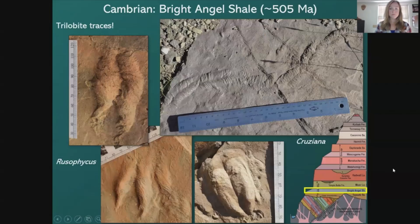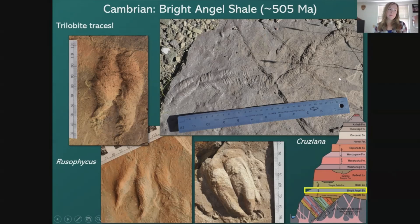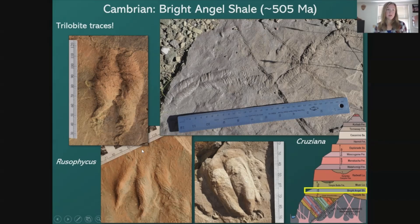Here are trilobite trace fossils — some of the trilobites we just looked at could have made these. Cruziana is a common trace fossil representing a trilobite moving along the seafloor; each striation represents the trilobite appendages as it moved and burrowed in the sediment. Rusophycus is another common trace resembling a trilobite resting in place — the trilobite would sink its legs into the sediment and burrow until nearly covered, perhaps to take refuge during a storm or hide from a predator.